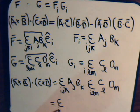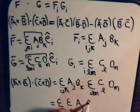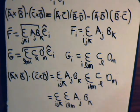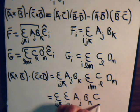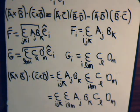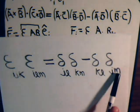Equals Epsilon IJK times Epsilon ILM. Epsilon IJK Epsilon ILM is this.